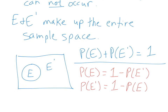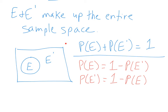Let me show you a picture. This box is our entire sample space — all the possible outcomes of our experiment. E is our event, and everything outside of E in the sample space is E complement. So obviously E plus E complement is the entire sample space. Using probabilities, we know that the probability of E plus the probability of E complement equals one. Basically, you're guaranteed to land either in E or outside of E — there is no other place.